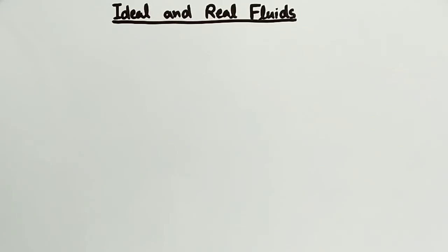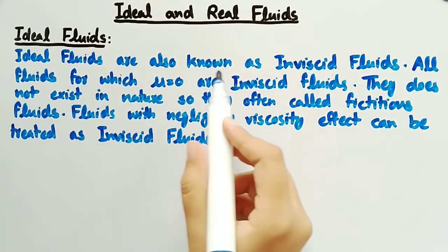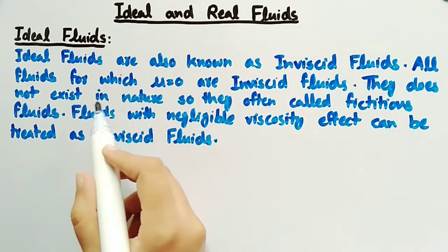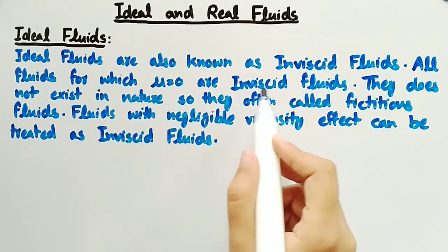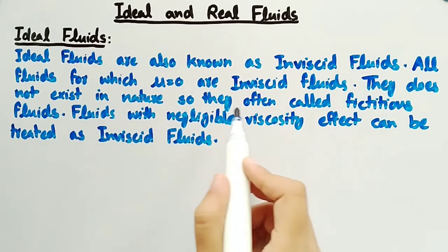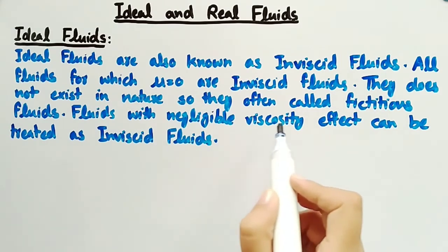In this video we will discuss ideal and real fluids. Ideal fluids are also known as inviscid fluids — fluids for which mu, the absolute or dynamic viscosity, is equal to zero. Inviscid fluids do not exist in nature, so they are often called fictitious fluids. Fluids with negligible viscosity effects can be treated as inviscid fluids.